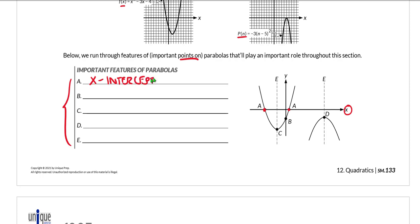By the way, those are also synonymous with the zeros or roots of the parabola. Again, we will be talking in a lot of detail about the relationship between intercepts and zeros and roots later on in this section.